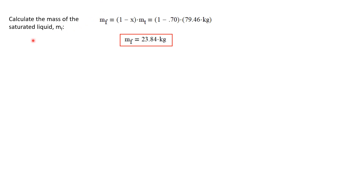Next, let's calculate the mass of the saturated liquid. The mass of the saturated liquid is simply the total mass minus the mass of the saturated vapor. Alternatively, the mass of the saturated liquid equals (1 minus x) times the total mass, since the mass of the vapor was x times the total mass. This gives us a mass of the saturated liquid of 23.84 kilograms.